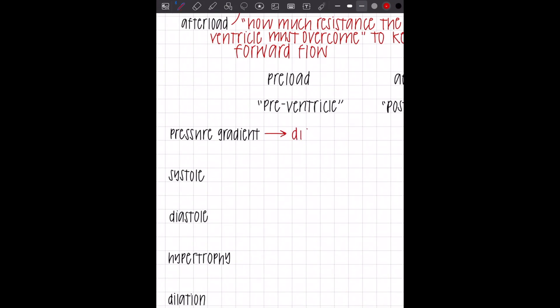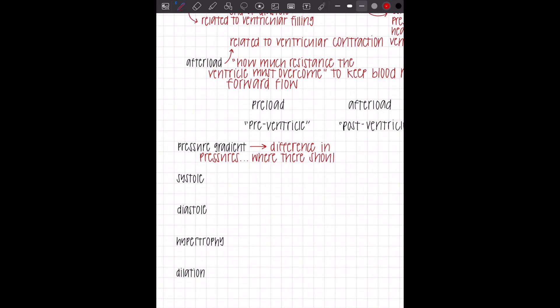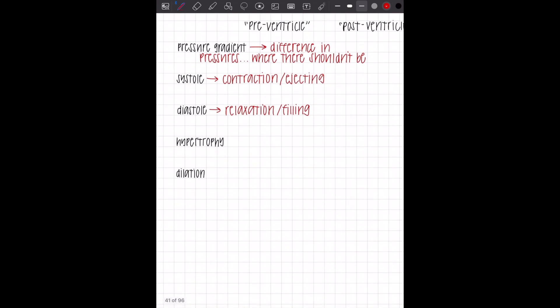The next one we've gone over in my first video, but pressure gradient, which is the difference in pressures where there shouldn't be. That's where we talked about aortic stenosis and that systolic difference. So what is systole and what is diastole? Systole is contraction and diastole is relaxation. During diastole filling is occurring and during systole ejection is occurring. That's really in relation to the ventricles.